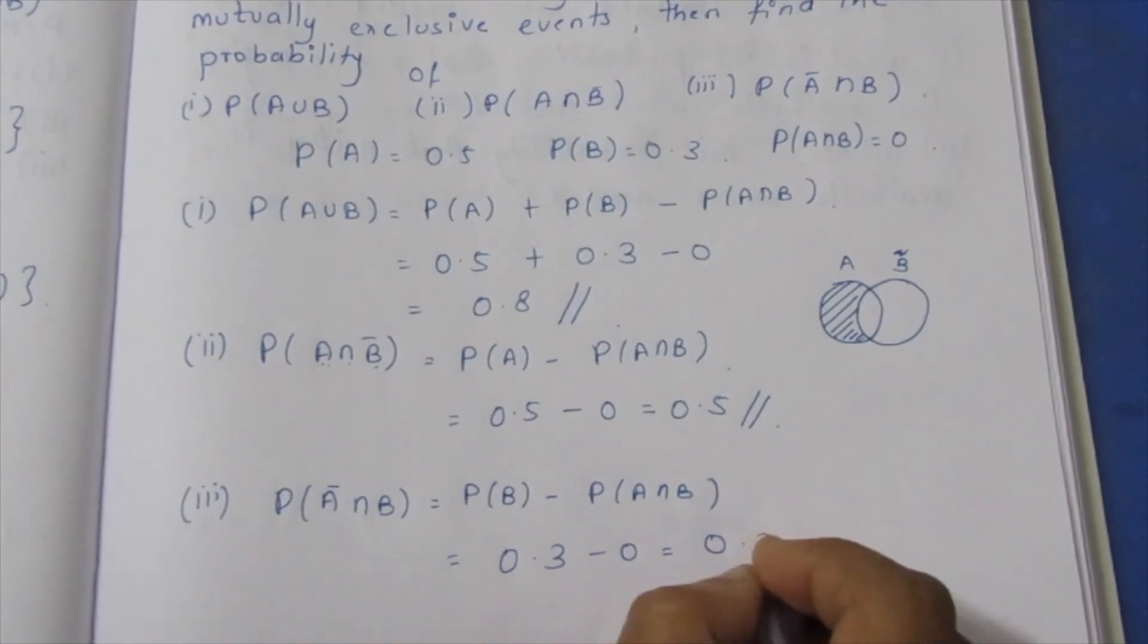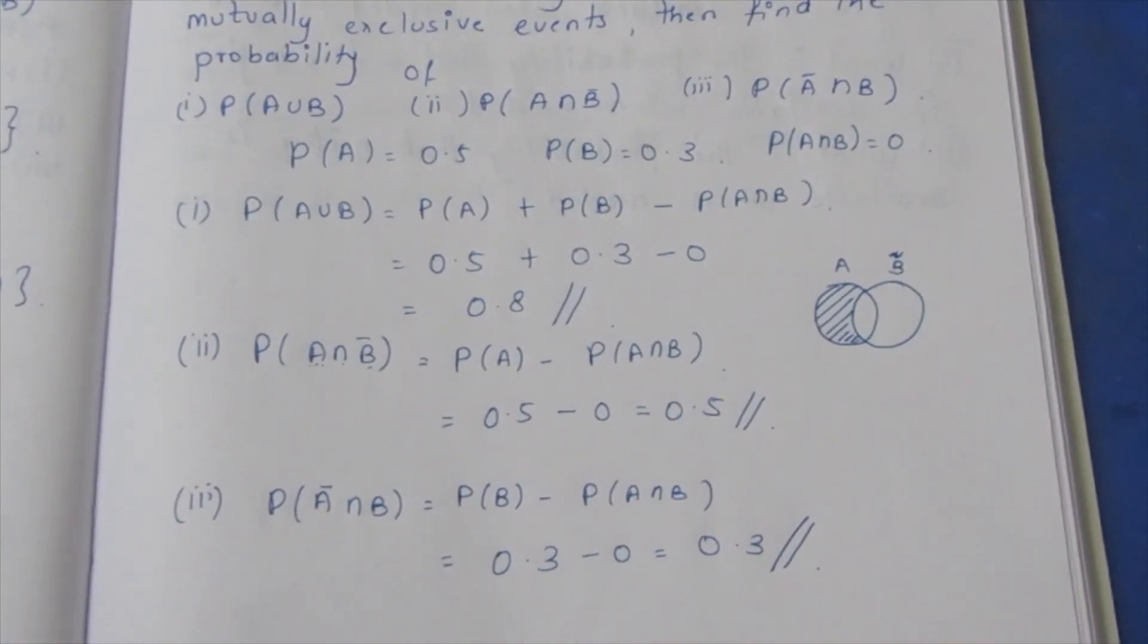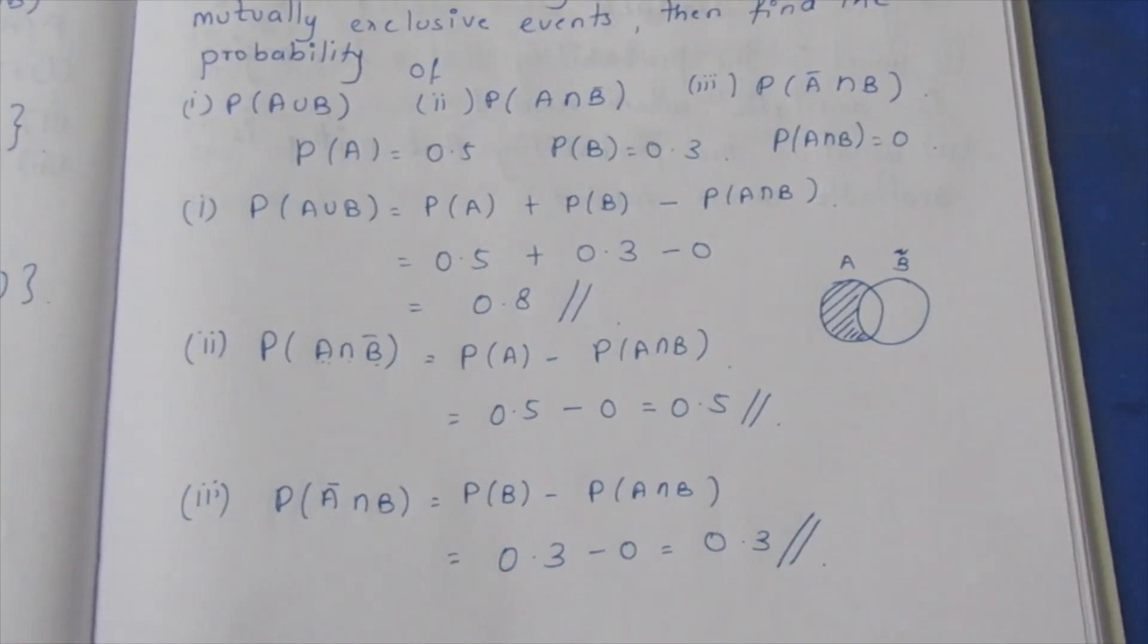This is 0.5. The final answer for the third subdivision. That is the sum, thank you.